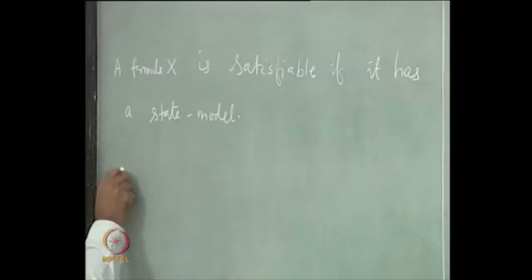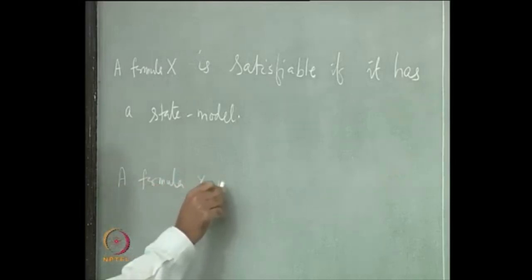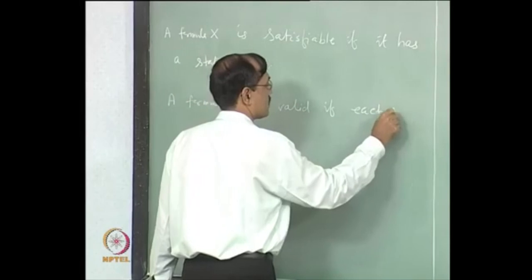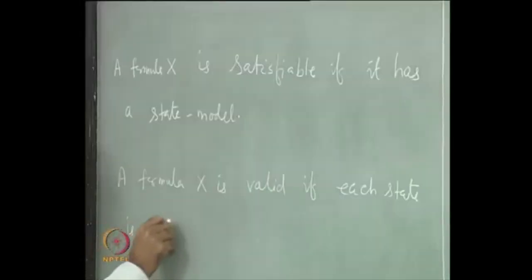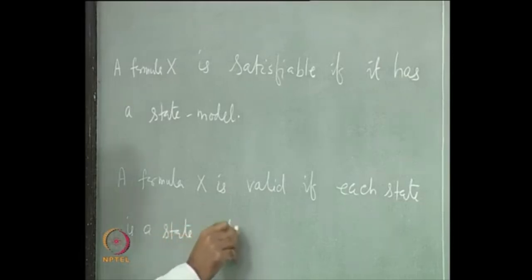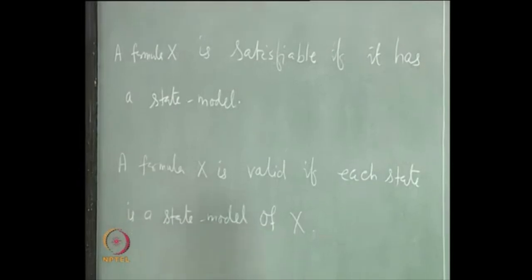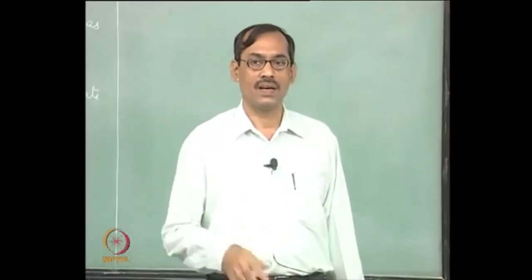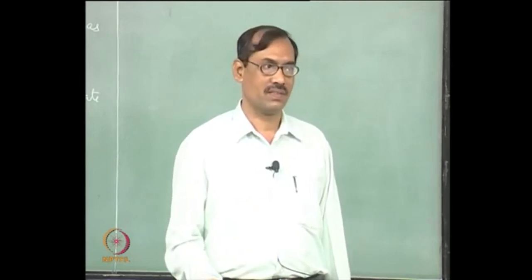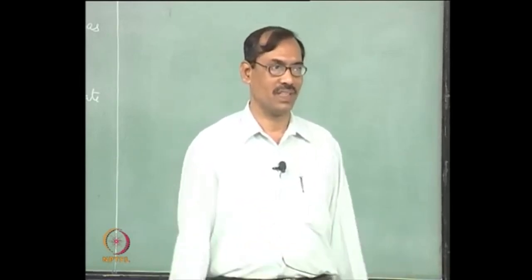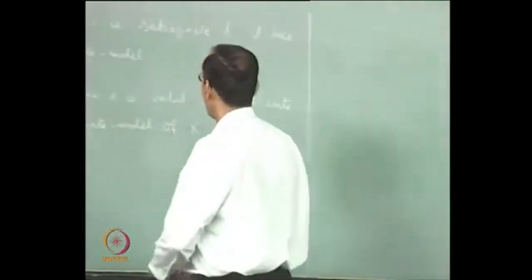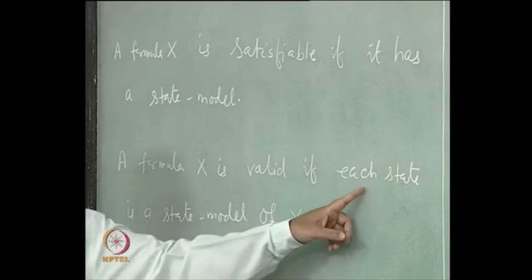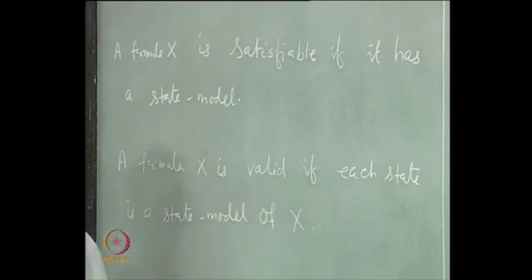Similarly, we can define validity. A formula x is valid if each state is a state model of x. Just like interpretations in propositional logic, we are now dealing with state models. A formula is invalid if this does not happen — meaning you can always find one state which falsifies x.